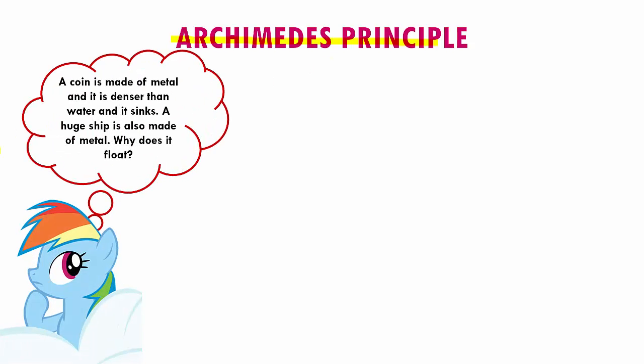Now let us look into Archimedes' principle. Suppose a coin made of metal is denser than water and it sinks — then how does a ship, which is also made of metal, float on water? Both of them are metals. We know that metal is more dense than water, so it has to sink. Why does a ship float on water?